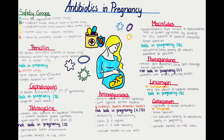The last and most alarming category is the X category. Studies in animals or humans have demonstrated fetal abnormalities, and/or there is positive evidence of human fetal risk based on adverse reaction data from investigational or marketing experience. The risks involved in use of the drug in pregnant women clearly outweigh potential benefits, so drugs in this category should be completely avoided.